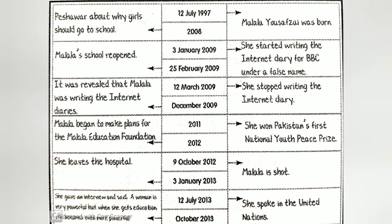Malala was born on 12th July 1997. She began planning for the Malala Education Foundation at the age of 15. What is common among the words 'on,' 'at,' and 'in'? These are prepositions. These words show the relation of time between the noun and pronoun. On, in, and at are prepositions of time.